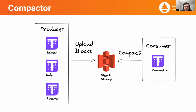So if we scale more on the producer side and we don't scale on the consumer side, then much more data will be uploaded to the object storage, and the compactor cannot keep up with the load, and then it falls behind, and finally backlog happens.